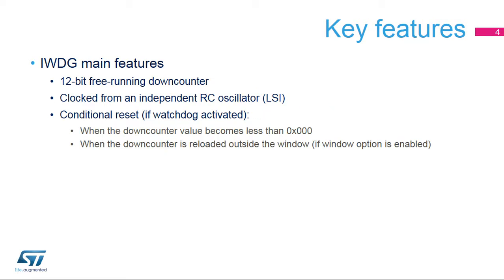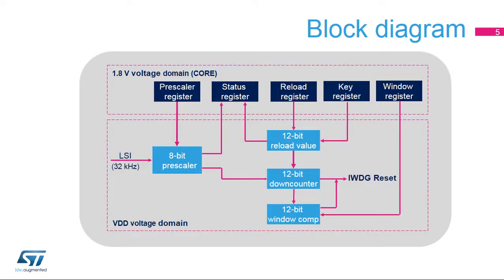The IWDG features a 12-bit free-running down-counter, clocked by an independent Low-Speed Internal RC Oscillator at 32 kHz. When the IWDG is activated, a reset is generated if the down-counter reaches zero, or when the down-counter is reloaded outside the window if this option is enabled.